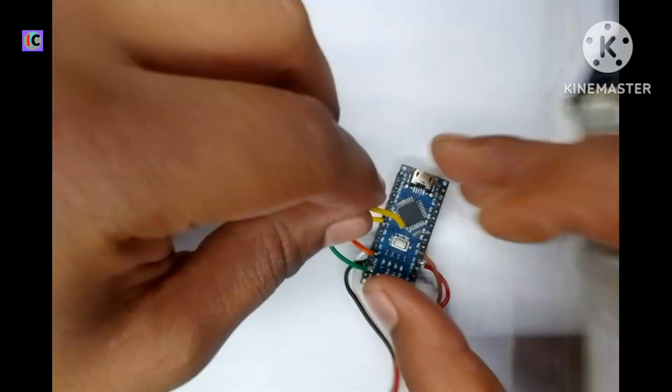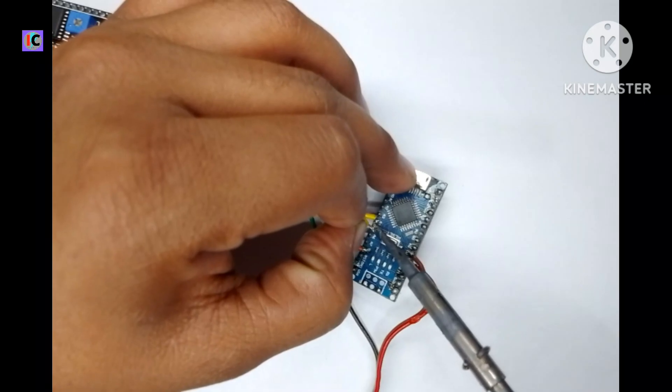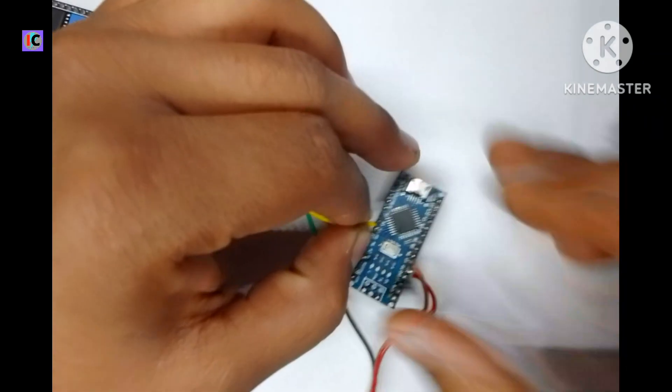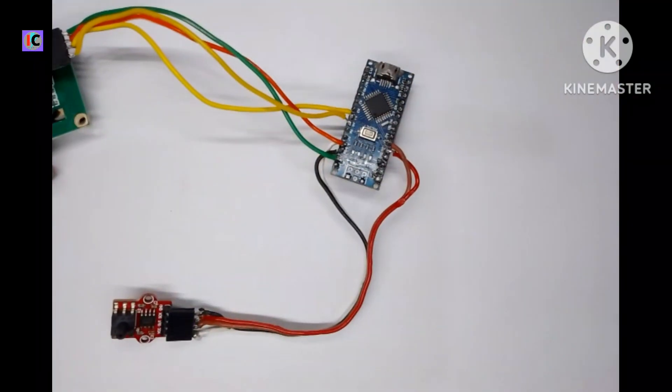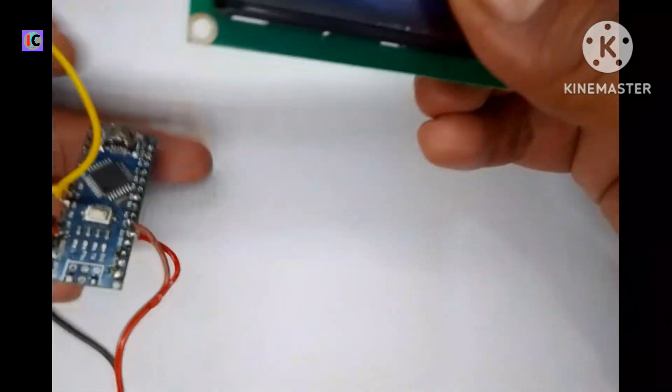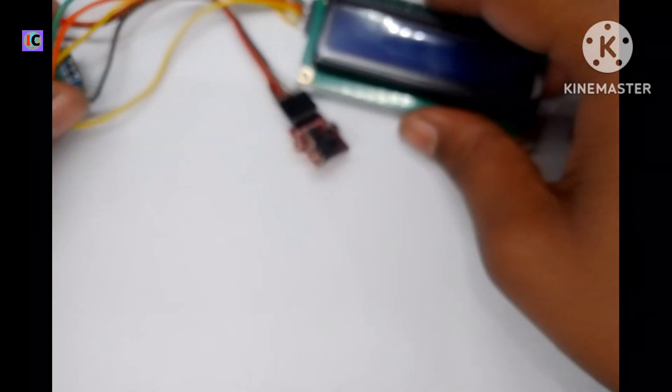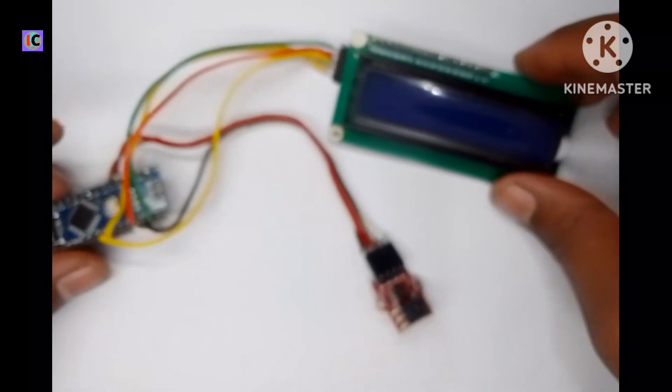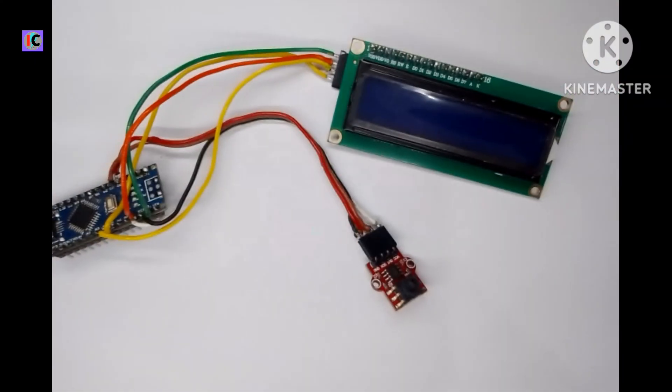Here you can see the wiring connections of the LCD display and sensor with Arduino is completed. Now we will connect Arduino to our computer and upload the code for this project. Let's move on to the coding portion.